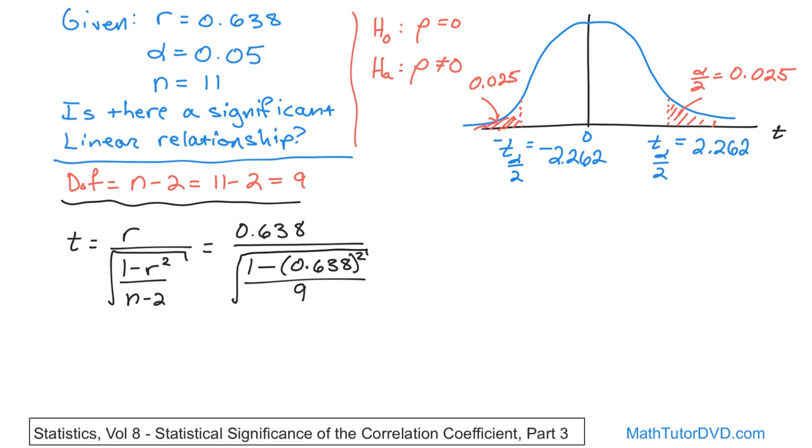So you're going to square this 0.638. You'll take that number, 1 minus that number. Then you'll take that result, divide by 9. Then you'll take the square root of that. Then you'll have a fraction with these two numbers divided. And the value that you get from t is going to be 2.486.